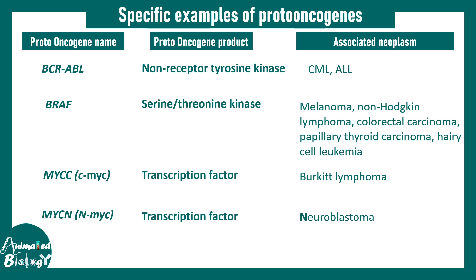CMYC and NMYC are transcription factors associated with Burkitt lymphoma and neuroblastoma, respectively. So through these examples we can see that some proto-oncogenes are signaling receptors, some are intracellular kinases, and some are transcription factors. Given this diversity, the commonality is that the aspect that goes wrong in all of them is the tuning of the cell cycle, growth, and proliferation.